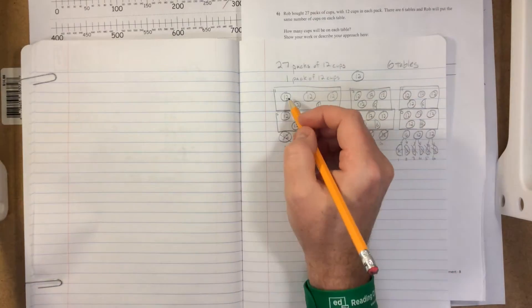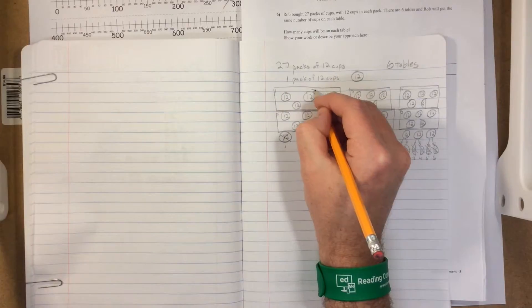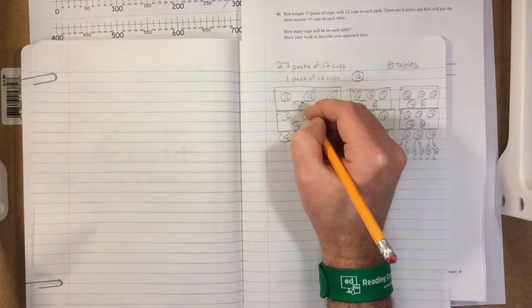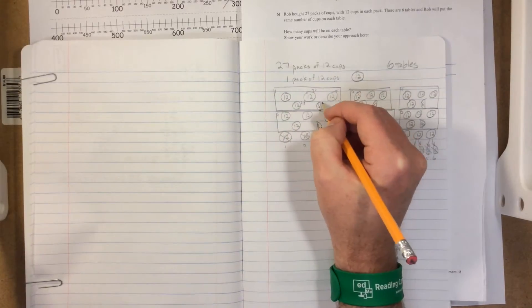So on one table we have 12, 24, 36, 48, plus six, which is 54.